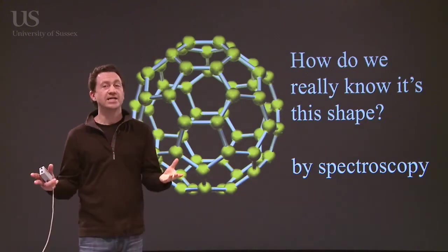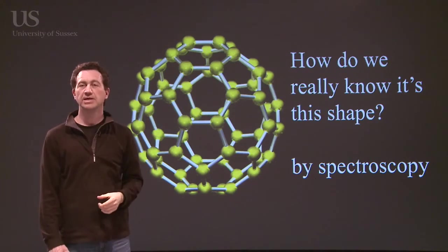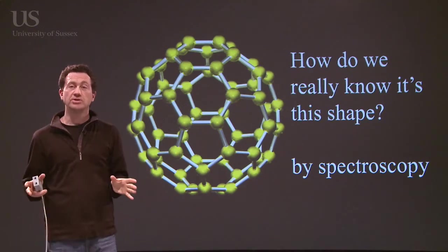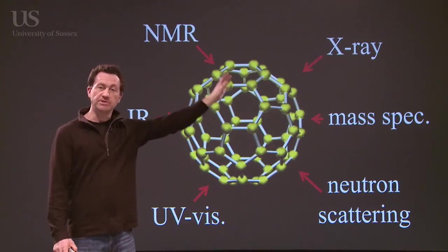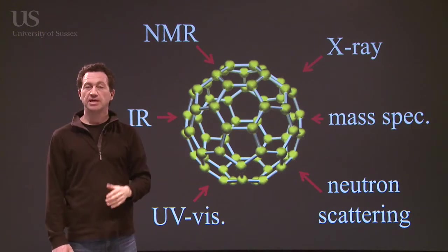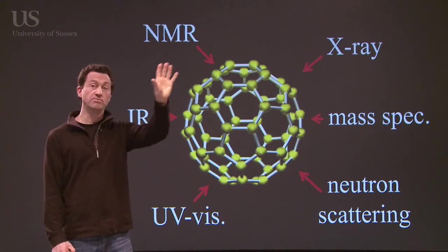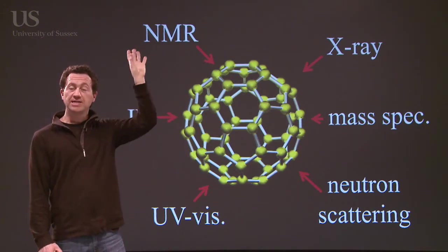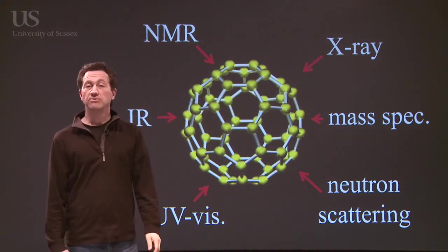So it's all very well me coming along saying it's got this structure, but how do we know? How do we know the buckyball or the C60 molecule has actually got this structure? And the way that scientists determine the structure of things is using spectroscopy. There are many different types of spectroscopy. X-rays, mass spectrometry, neutron scattering, UV-visible spectra, infrared, and nuclear magnetic resonance. We're going to look at some of these today to prove that we know the structure of this thing.